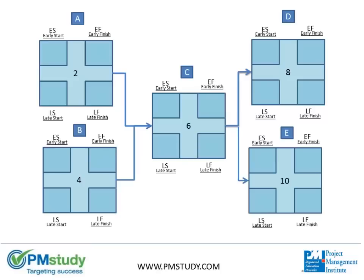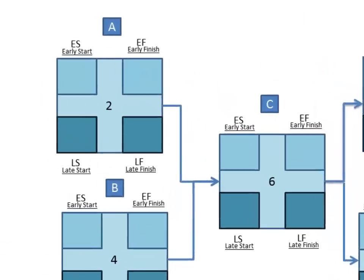After the forward pass, we'll end with the backward pass, which is essentially going from the end of the project back to the beginning to calculate the latest time a task can start and finish without incurring a delay in our project schedule. Okay, are you ready to begin? Here we go.